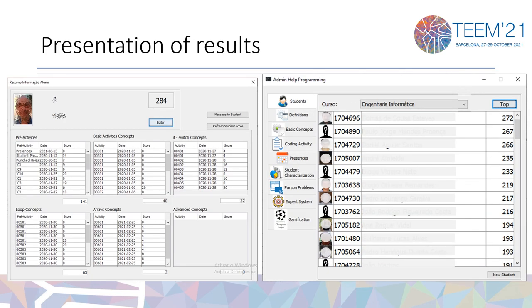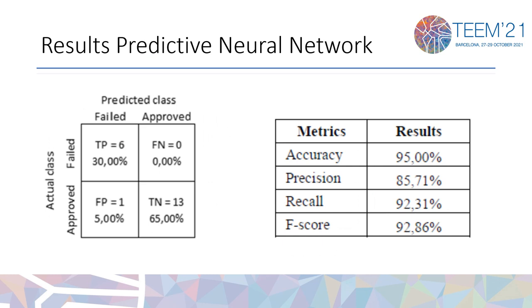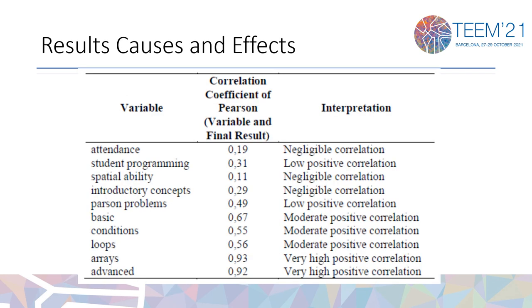The teacher can follow all activities performed by students. We use a neural network predictive model for student failure to help the teacher make decisions about each student. The results obtained using this model are good, as you can see from the confusion matrix and metrics like accuracy. This table presents the results of the analysis of the causes and effects of different variables collected.